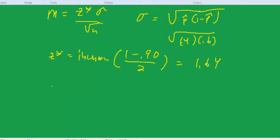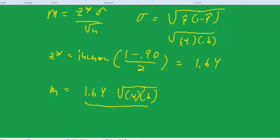So that'll give us the margin of error is equal to 1.64 times the square root of 0.4 times 0.6 all over 8. And that'll be approximately equal to, I'm going to say, I'll calculate it.